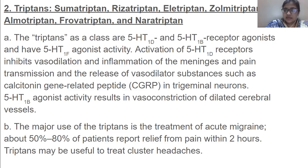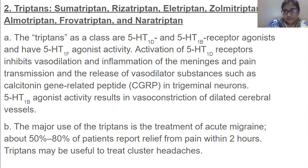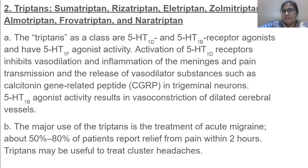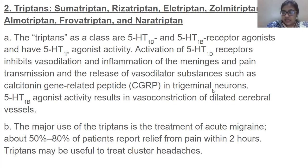Regarding trigeminal neurons — these are found in cranial nerve 5, the most complex cranial nerve, which innervates the face and controls movements such as biting and chewing, and provides facial sensations. These trigeminal neurons extend from cranial nerve 5. 5-HT1B agonist activity results in vasoconstriction of dilated cerebral vessels.